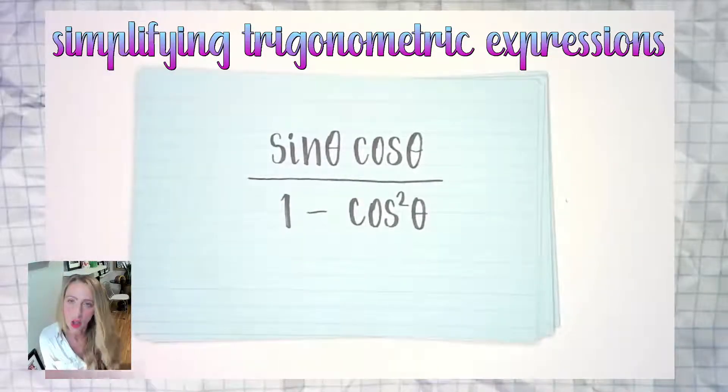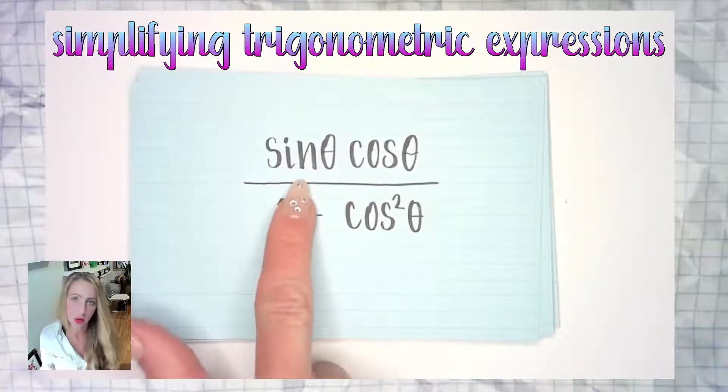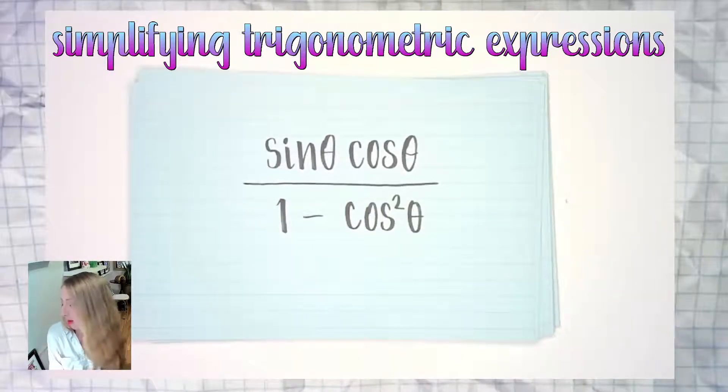Here in this example we are going to simplify the expression in front of us. We have in our numerator the product of sine theta cosine theta and in the denominator we have the difference 1 minus cosine squared theta.